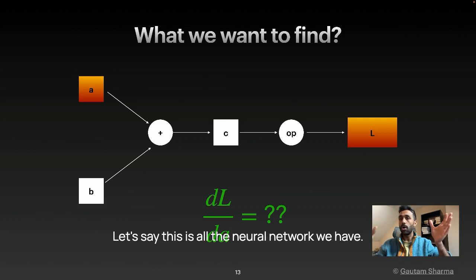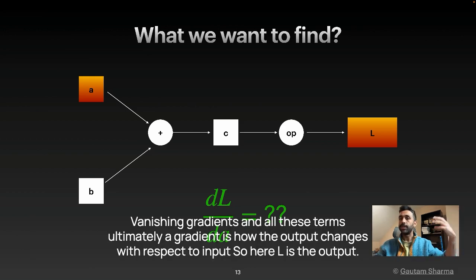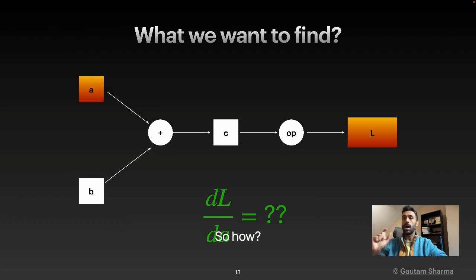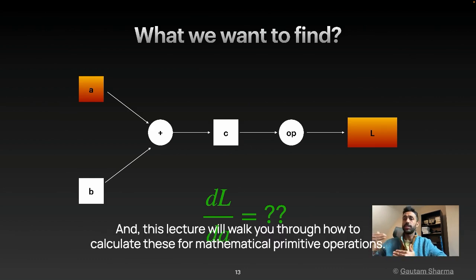Let's say this is all the neural network we have. It's just a simple graph. In machine learning or deep learning, you have always heard of gradients, vanishing gradients, and all these terms. Ultimately, a gradient is how the output changes with respect to input. So here L is the output. So how output L changes with respect to A, that is DL by DA. And this lecture will walk you through how to calculate these for mathematical primitive operations.